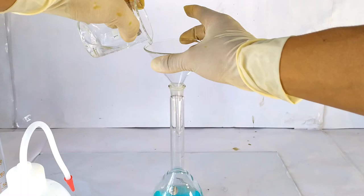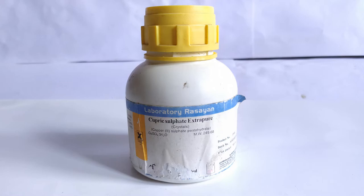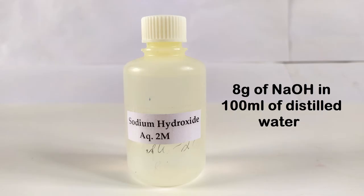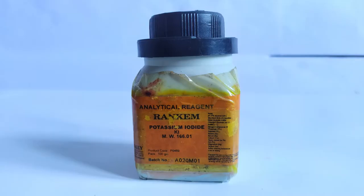To prepare 200 ml of Biuret reagent, you will need the following: copper 2 sulfate pentahydrate, sodium potassium tartrate, 2 molar sodium hydroxide, and potassium iodide.